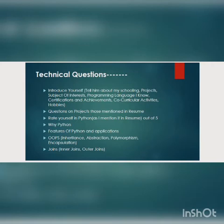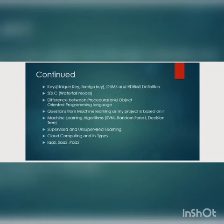After this he asked me questions from DBMS — what are joins and what are the types of joins: inner join, outer join, full outer join, right outer join, and left outer join. After this he asked about keys in DBMS, the difference between unique key and primary key, what is a foreign key, and the difference between DBMS and RDBMS.